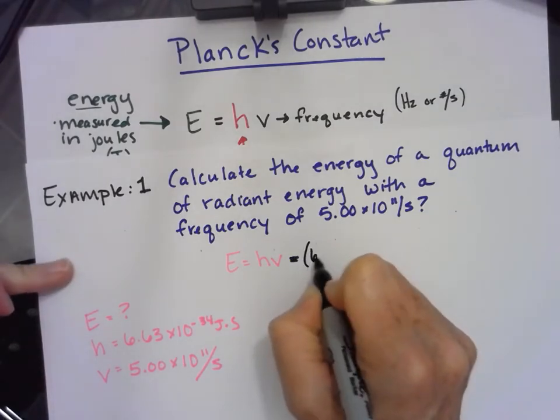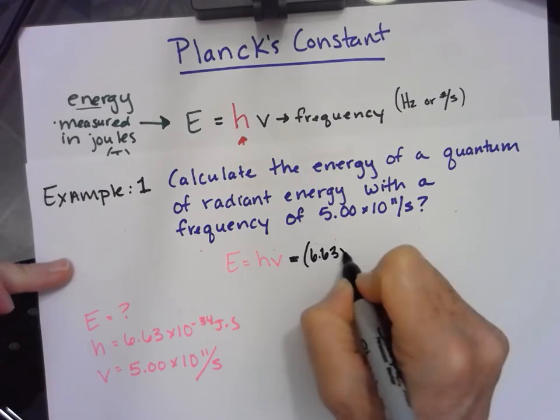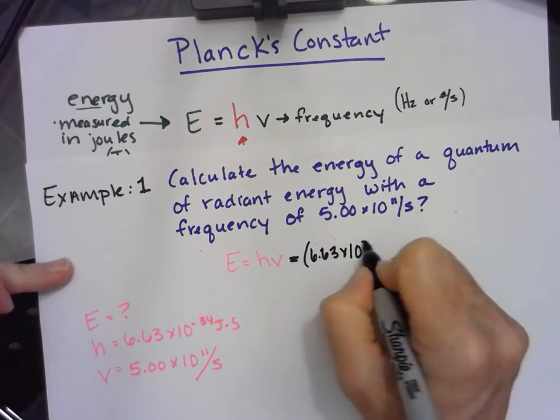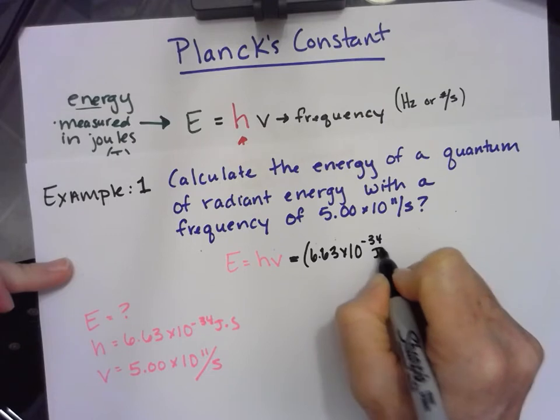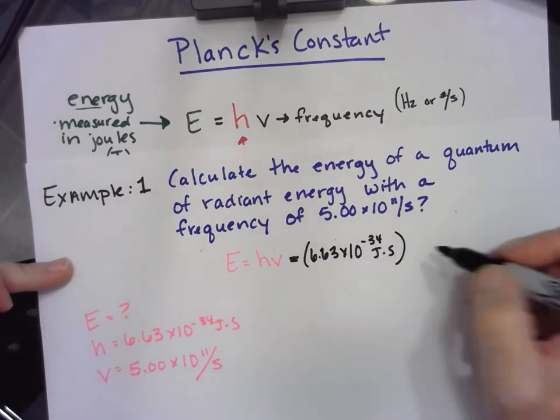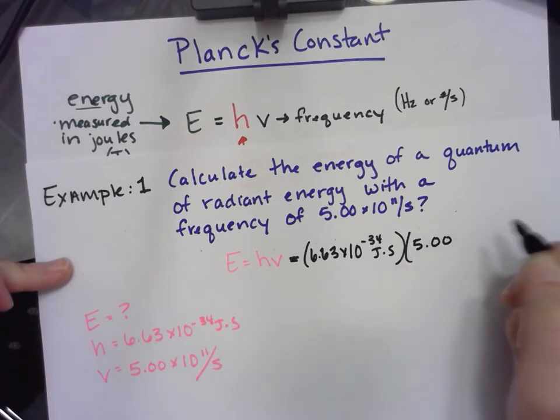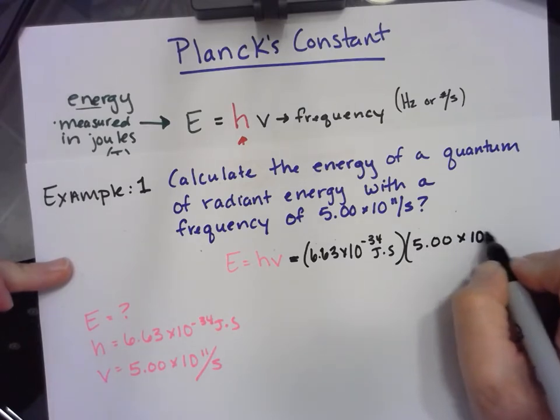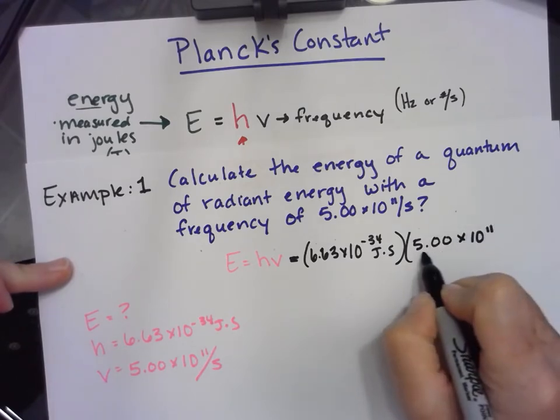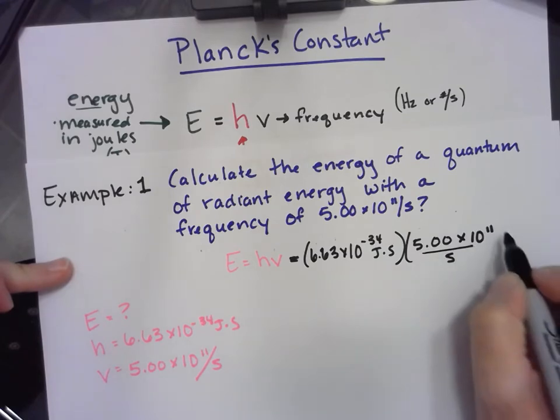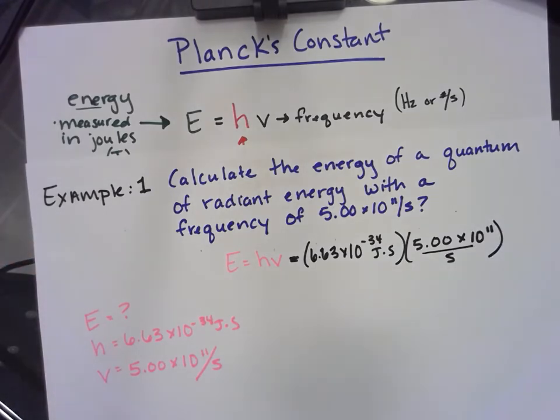So 6.63 times 10 to the negative 34 joules times seconds. I'm going to multiply that times the frequency. So 5.00 times 10 to 11. And I'm going to, instead of doing the dash, do the horizontal divide line per second.